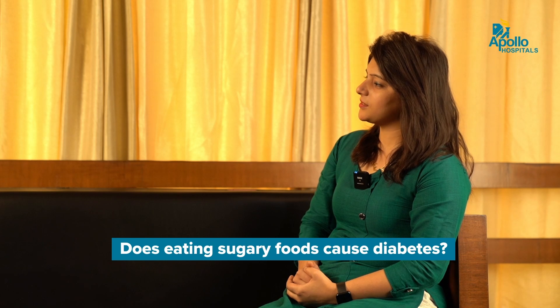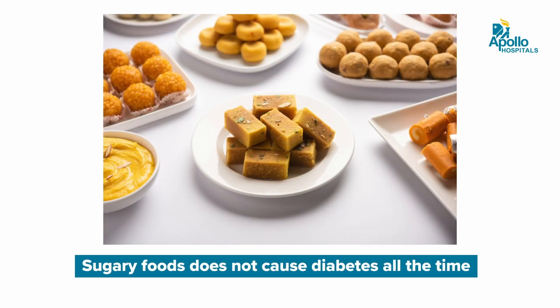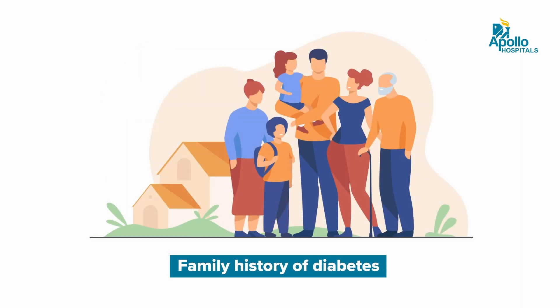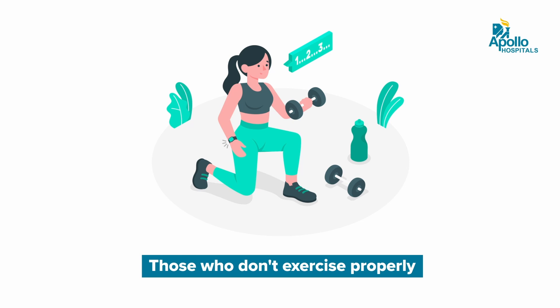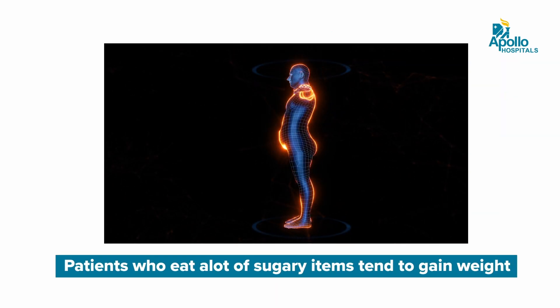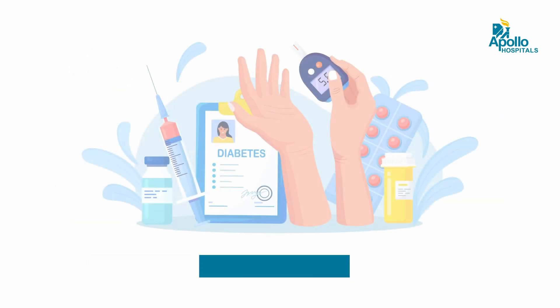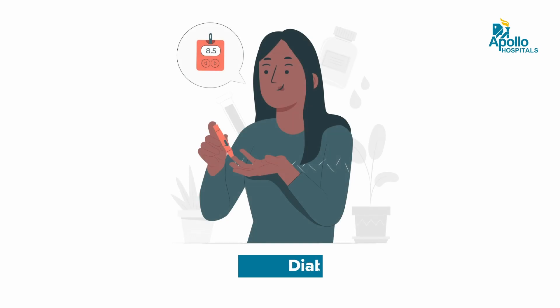Does eating sugary foods cause diabetes? Taking sugary items will not cause diabetes all the time — it is basically a myth. Those patients who are predisposed to develop diabetes, like those who are obese, have a family history of diabetes, or lead a sedentary lifestyle — if they eat a lot of sugary items, they tend to gain weight. Overweight and obesity is the main cause of insulin resistance, and insulin resistance leads to the development of diabetes. So it is not eating sugary items directly, but weight gain from excess sugar that is the risk factor.